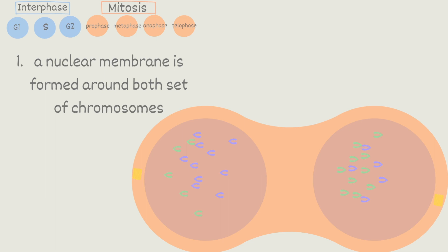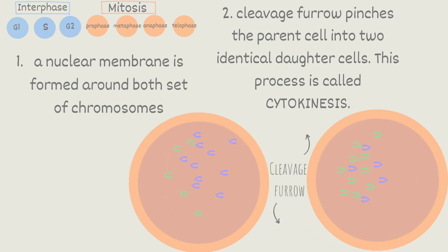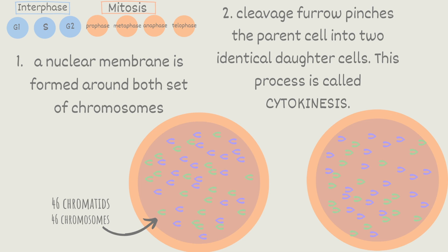Secondly, and this step is really important, a cleavage furrow pinches the parent cell into two identical daughter cells. This process is called cytokinesis. Cleavage furrow and cytokinesis are both very necessary to learn, necessary to identify and understand both terms. So there's this little pinch here and little pinch there. These areas that are getting pinched are called the cleavage furrow. The cleavage furrow will increasingly pinch and sever the parent cells into two daughter cells. Each daughter cell will end up with 46 chromatids which is equal to 46 chromosomes.